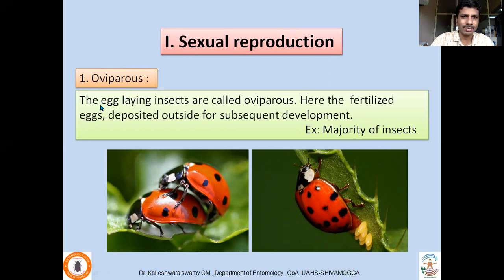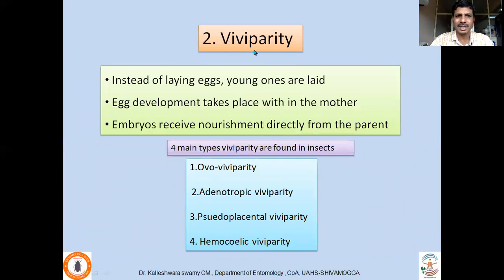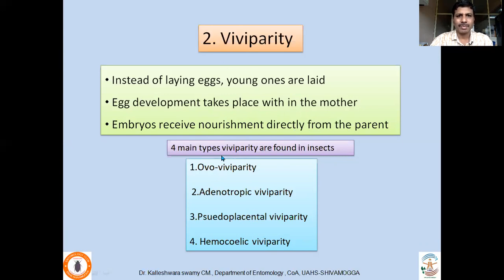Two types of sexual reproduction have been identified: oviparous and viviparous. Oviparous means egg-laying; the fertilized eggs are deposited outside for subsequent development. In viviparous species the egg develops within the mother, either in the haemocoel or in the reproductive tract, hatches inside, and young ones are deposited — with embryo nourishment coming directly from the parent. Four main types of viviparity are found in insects: oo-viviparity, adenotrophic viviparity, pseudoplacental viviparity, and haemocelic viviparity.